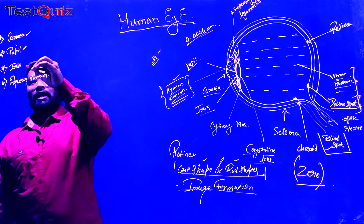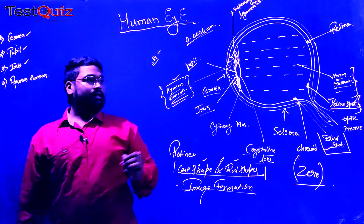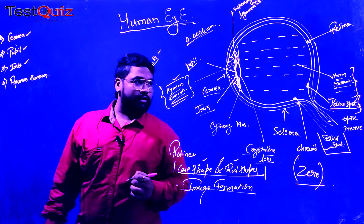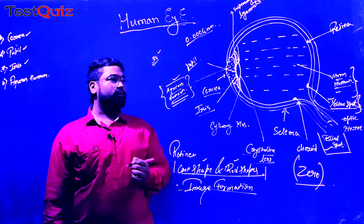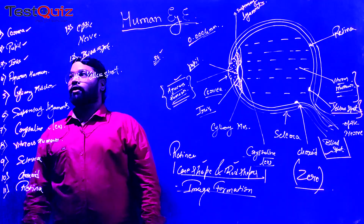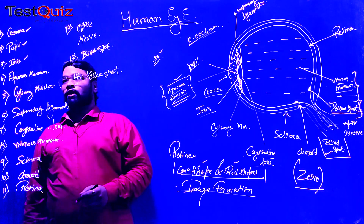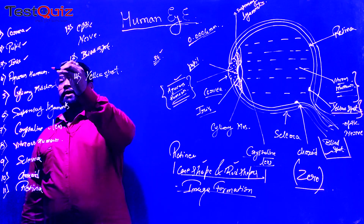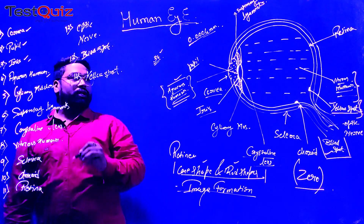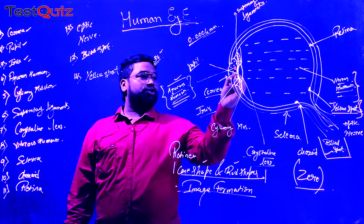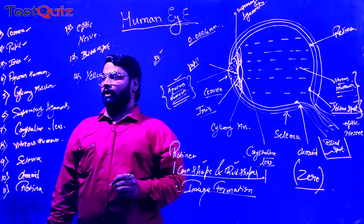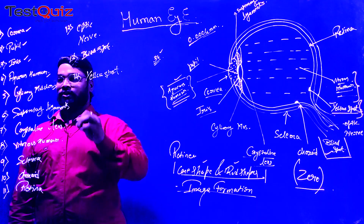The next one is the iris. Next, we have the aqueous humor. The aqueous humor gives moisture to the human eye, through which the particular movement of the eye can occur in a smooth interaction.